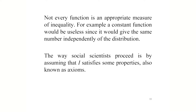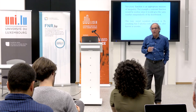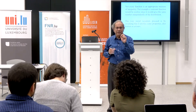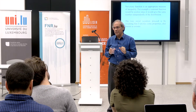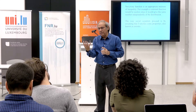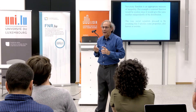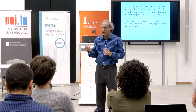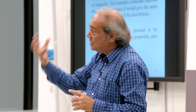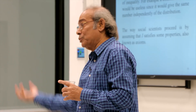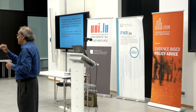The way social scientists proceed is by assuming that I satisfies some properties, also known as axioms. A postulate or axiom is a property that is intrinsic to the notion of inequality. When you impose postulates on I, you are imposing some value judgment that gives you that particular number — it is intrinsic to the notion of inequality.